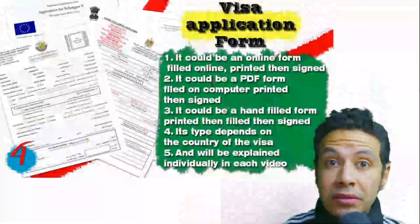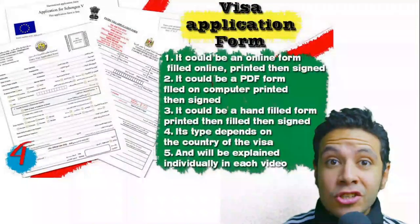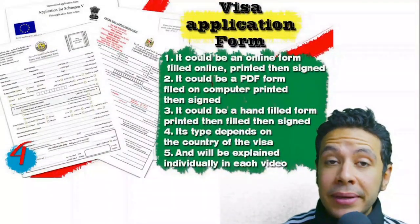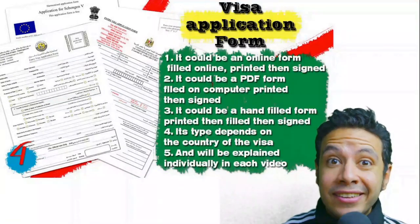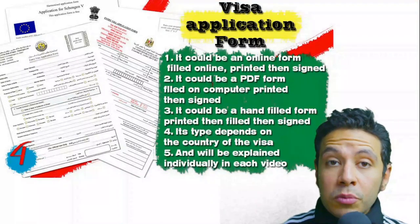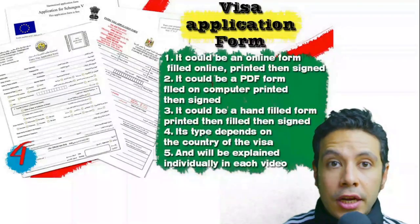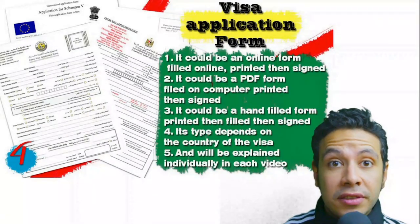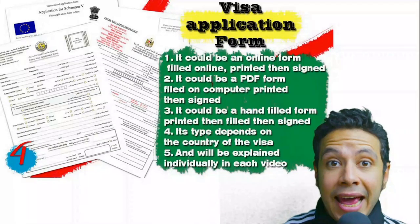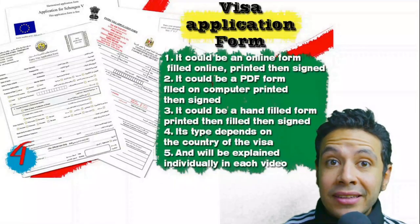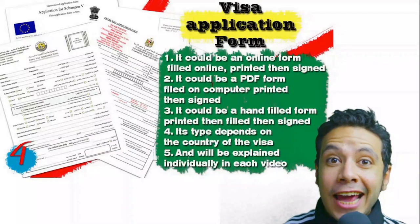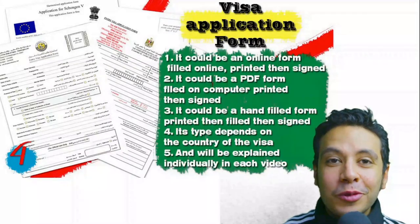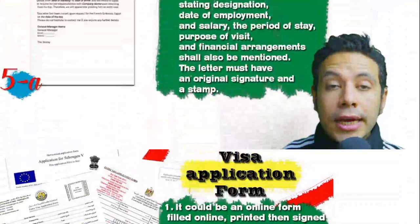For the visa application form, in general you need only one copy, but sometimes two or three copies are required. Visa forms differ from country to country. Generally you print it and fill it manually, but many countries now provide an online platform so you can fill it online, then print and sign it. Fill the application form as demonstrated in this video.